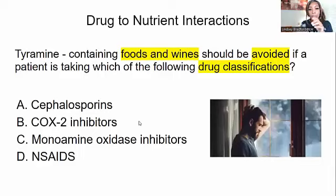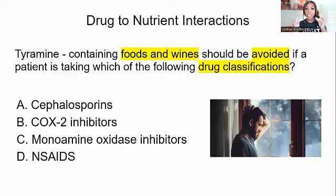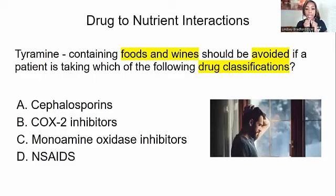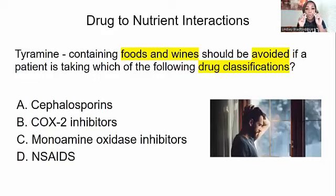We're talking again about drug-to-nutrition interactions — how to avoid different drug reactions and side effects. One of the things to pay close attention to is key words. This is test-taking strategy number one: make sure you are highlighting key words. Key words are typically three, four, or five words out of the entire problem that will help point you to the right answer. You should be highlighting about four words; if you have eight words in the question and five highlighted, that's a little too much.